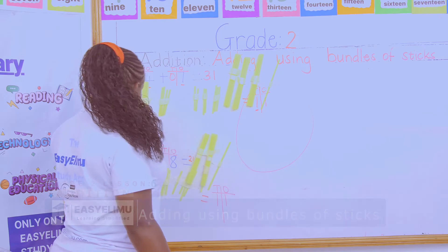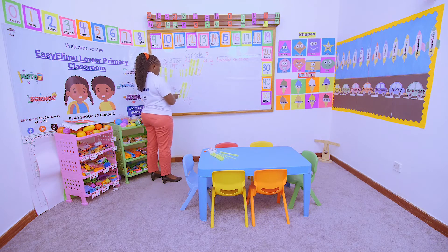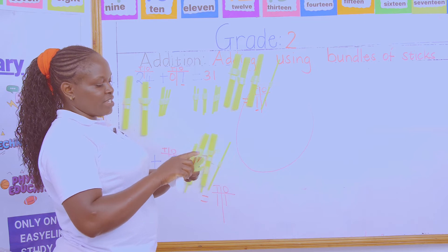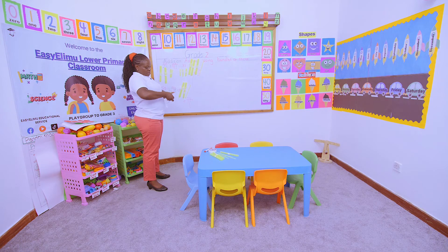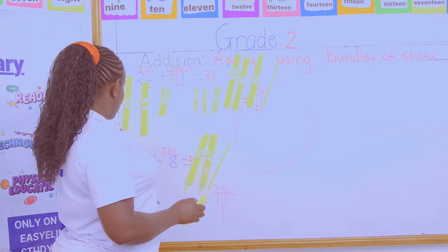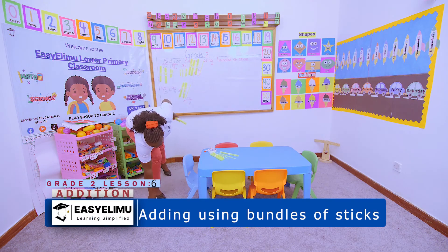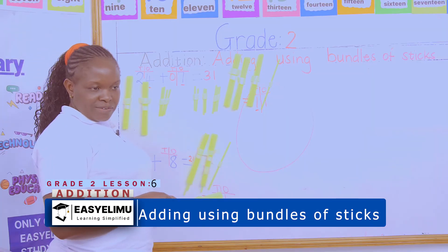How did I get 21? I added this ten to the ten I got after placing the ones together. I take my three ones and my eight ones, put them together: one, two, three, four, five, six, seven, eight, nine, ten — I form one bundle of ten sticks plus one stick remaining. I take that ten and put it together with the other ten, plus the one stick that remains. Two tens and one one equals 21. Any questions?